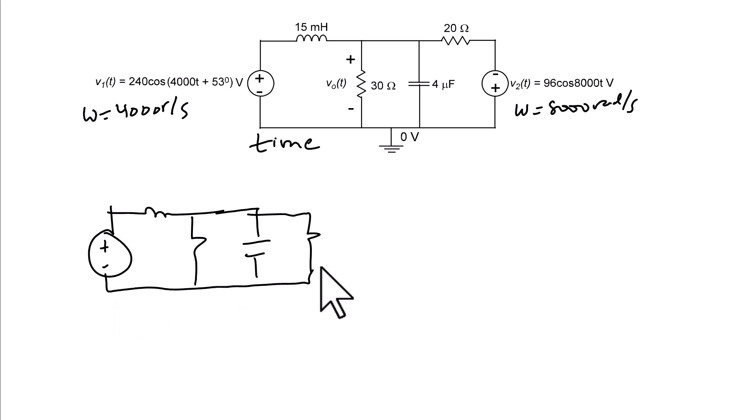So here's what our circuit looks like where the voltage source is 240 with an angle of 53 degrees. And the units are volts. The impedance of the inductor is J times 4000 times 15 millihenry, so the impedance of the inductor is J 60 ohms. And then we have the 20 ohm resistor here and a 30 ohm resistor here. And we're looking for V naught.